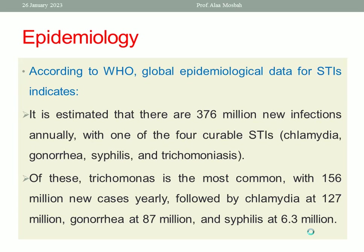Of these, Trichomonas is the most common, constituting 156 million new cases yearly, followed by Chlamydia at 127 million per year, Gonorrhea at 87 million per year, and Syphilis at 6.7 million per year. This data is according to the World Health Organization.